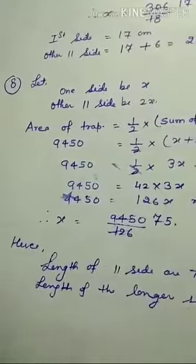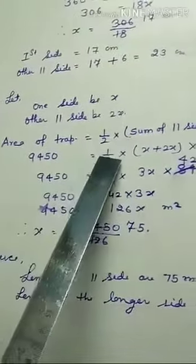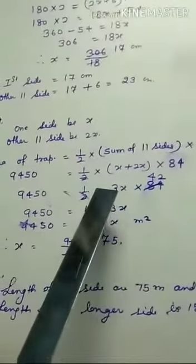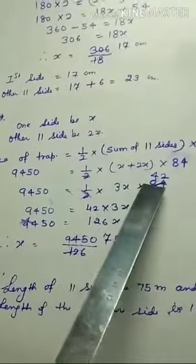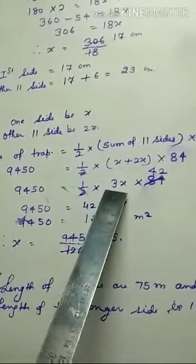Let one side be x and the other parallel side be 2x. Area of a trapezoid equals 1/2 times the sum of parallel sides times height. So x and 2x equals 3x.